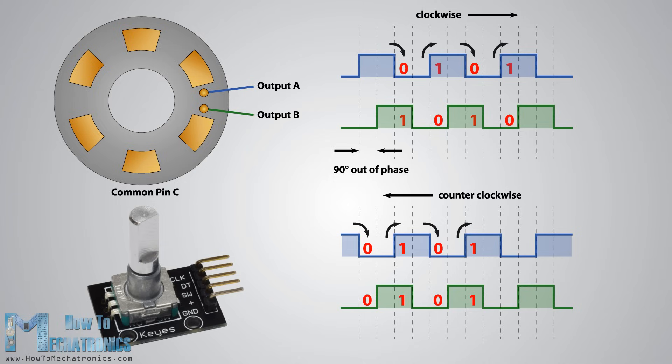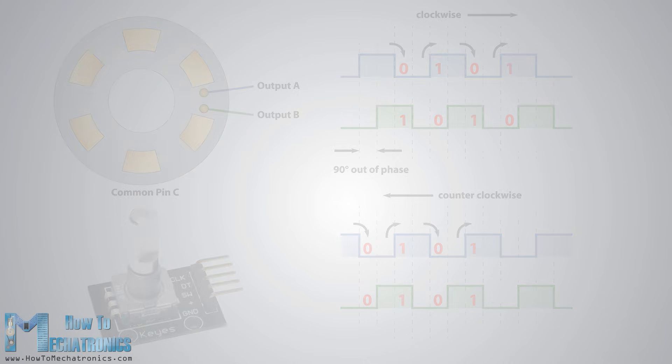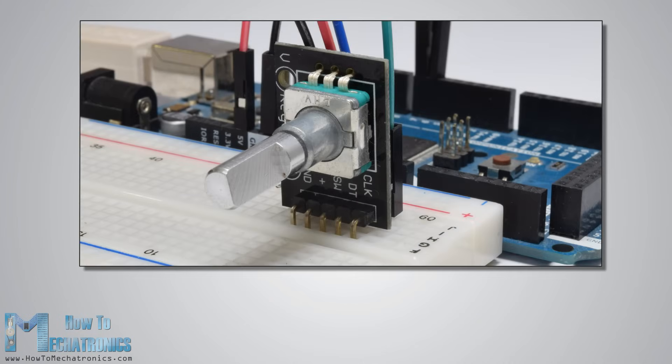That's the basic working principle of our rotary encoder, so now let's make a practical example of it using the Arduino. The particular model that I will use for this example comes on a breakout board and it has five pins. The first pin is the output pin A, the second pin is the output pin B, the third pin is the button pin and of course the two other pins are the VCC and the ground pin. We can connect the output pins to any digital pin of the Arduino board.